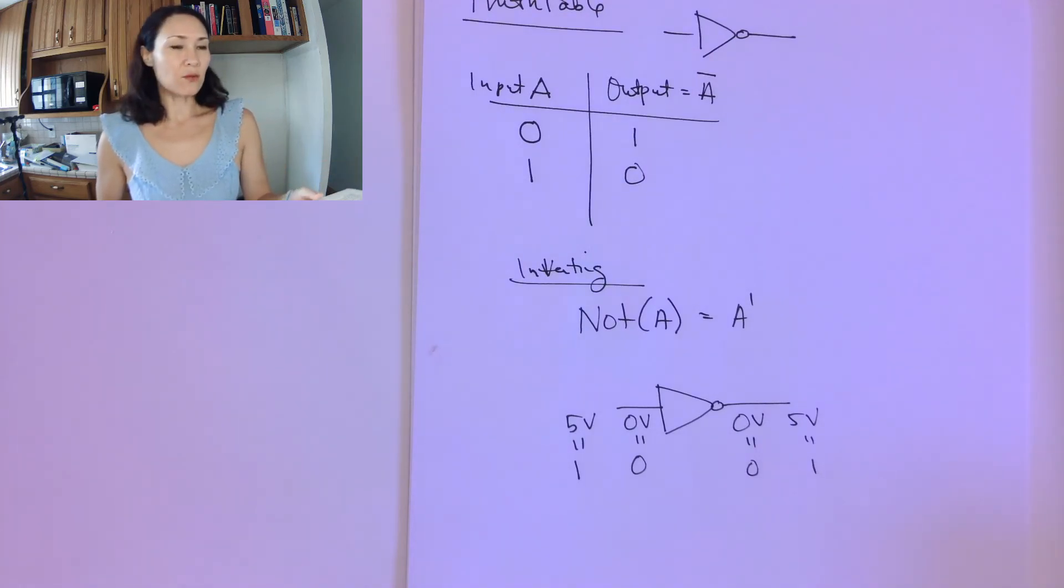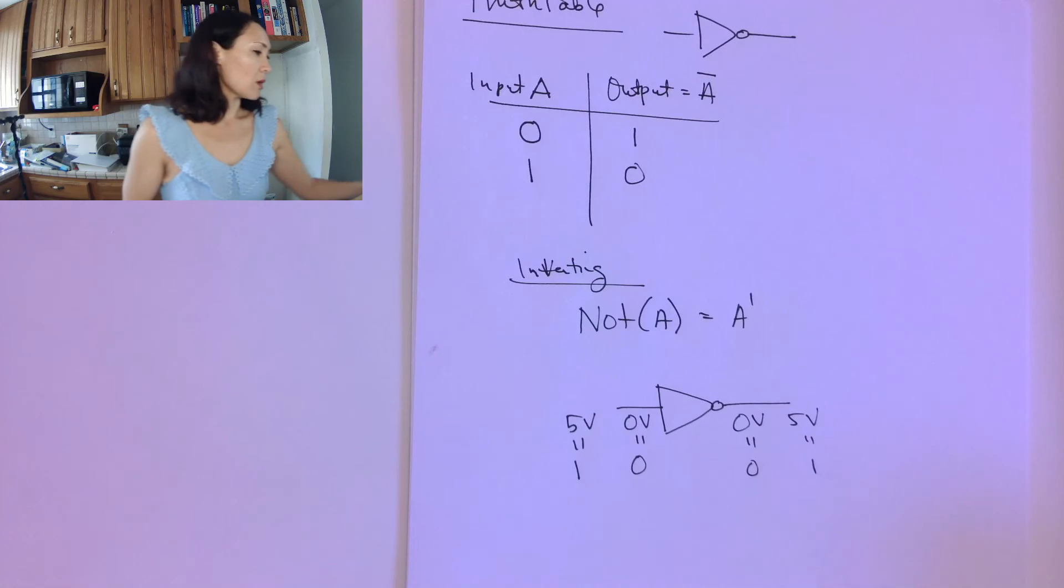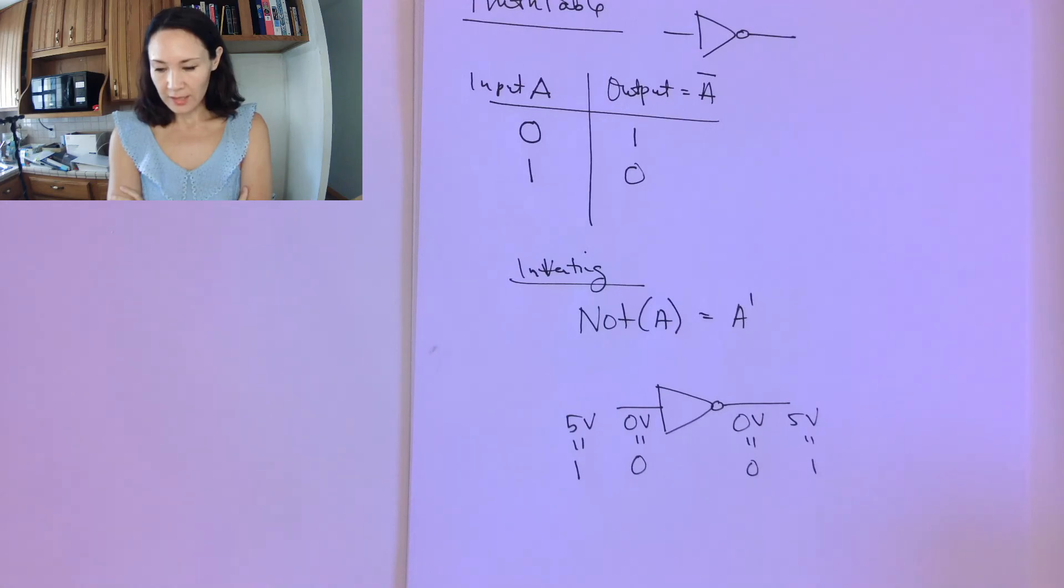So that's the first gate, the inverter. We're going to be using inverter quite a bit. And so kind of get comfortable with seeing it. It's the most basic gate. It's also one of the fastest gates. And I'll show you later on how we can integrate that into larger digital circuits.